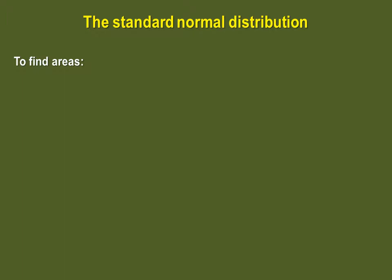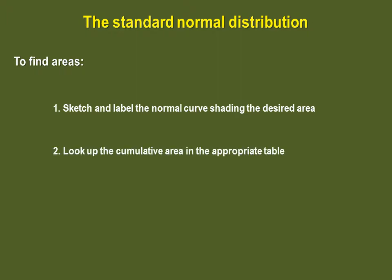Now, this is all fine and dandy, but how do we find areas associated to specific values under the standard normal distribution curve? We must go through these three steps. Step 1 is to sketch and label the normal curve shading the desired area. Step 2, look up the cumulative area in the appropriate table. And step 3, if necessary, perform the appropriate operation to obtain the desired area. Of course, we will do a few examples.